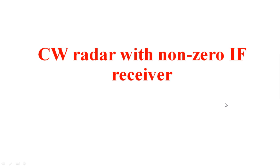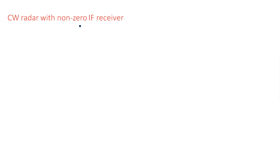In this video I am going to discuss CW radar with non-zero IF receiver. What do you mean by non-zero IF receiver and zero IF receiver? Non-zero IF receiver means an IF amplifier is present in the receiving section. Zero IF receiver means there is no IF amplifier component involved in the receiver section.